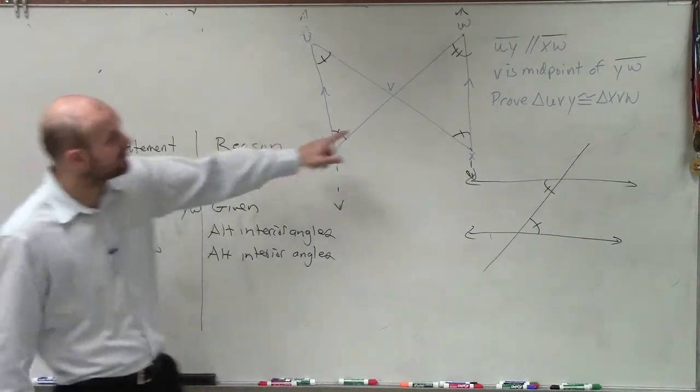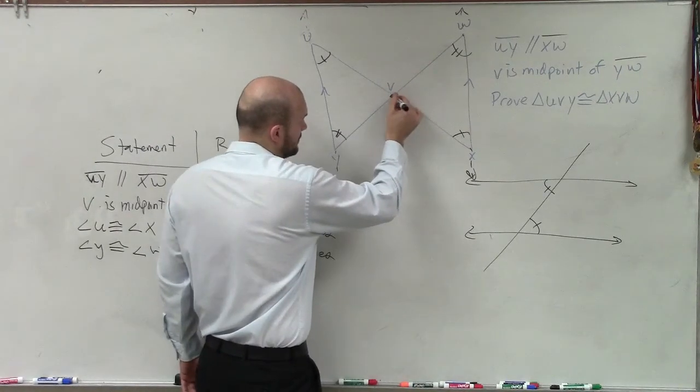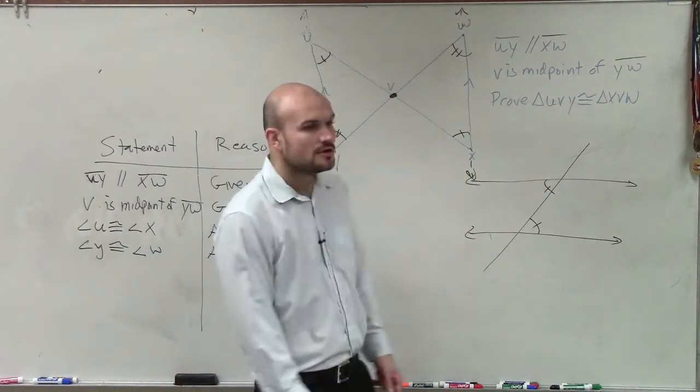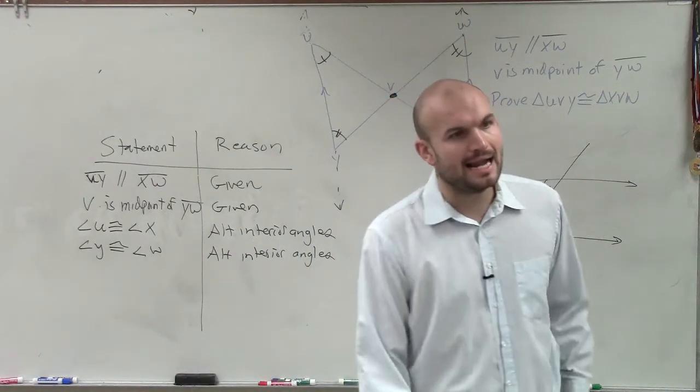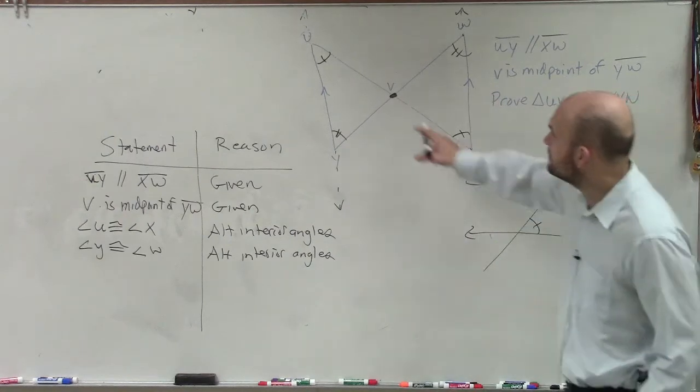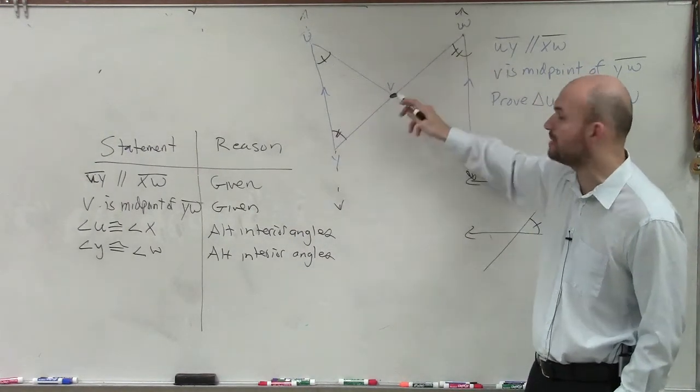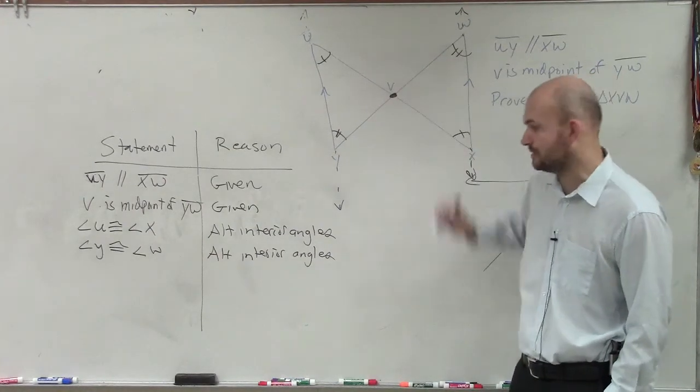The next thing, the next piece of information, they said V is the midpoint. V is the midpoint. So, Zack, if V is the midpoint, what is that? If V is the midpoint of my line YW, what does that tell you about the placement of V in addition to the line?